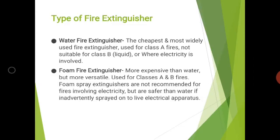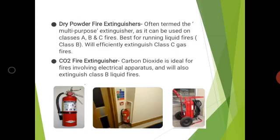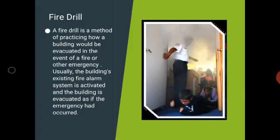Types of fire extinguisher include: the water fire extinguisher, which is the cheapest and most widely used, suitable only for class A fires. The foam fire extinguisher is more expensive and can be used for class A and class B fires. The dry powder extinguisher is used for class A, B, and C fires and is very efficient for extinguishing class C gas fires. The CO2 (carbon dioxide) fire extinguisher is ideal for fires involving electrical apparatus as well as class B fires.